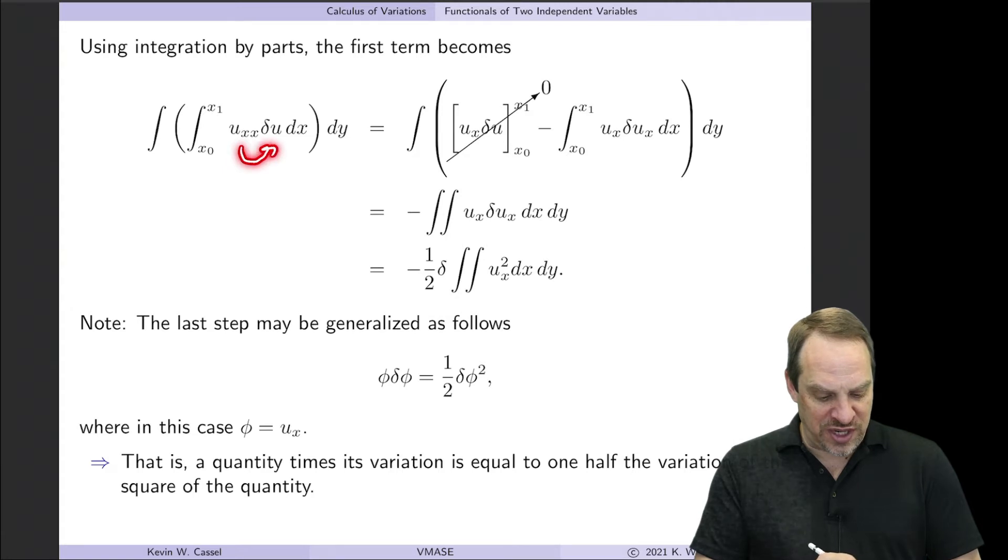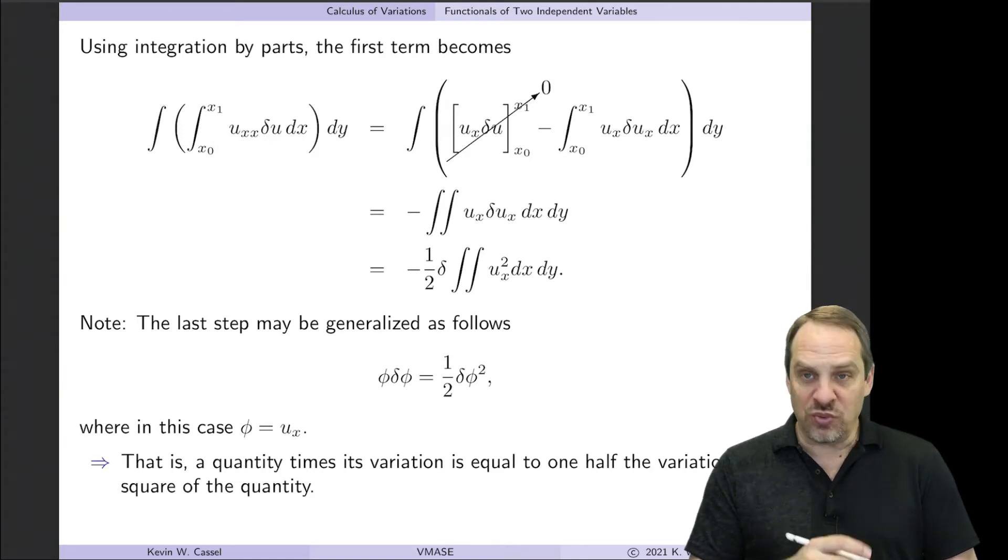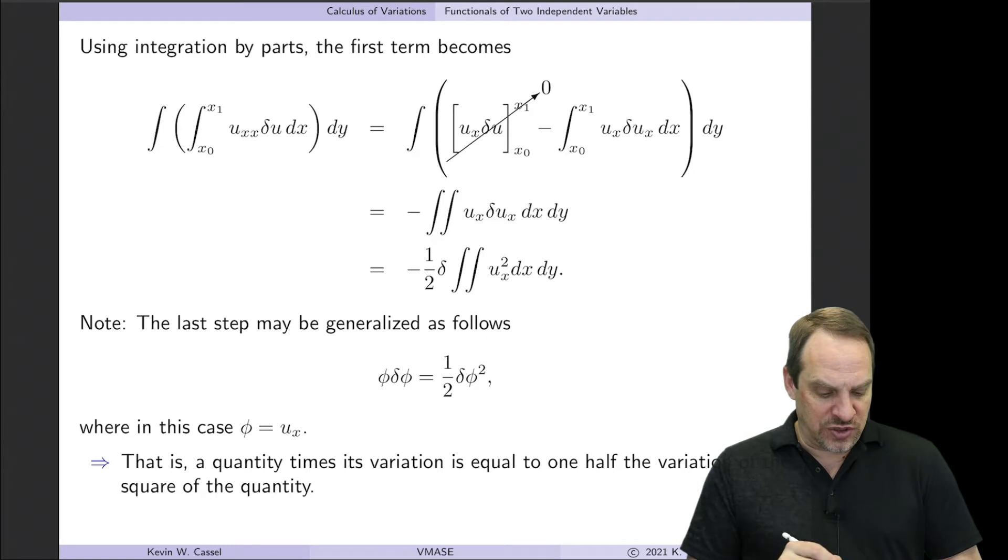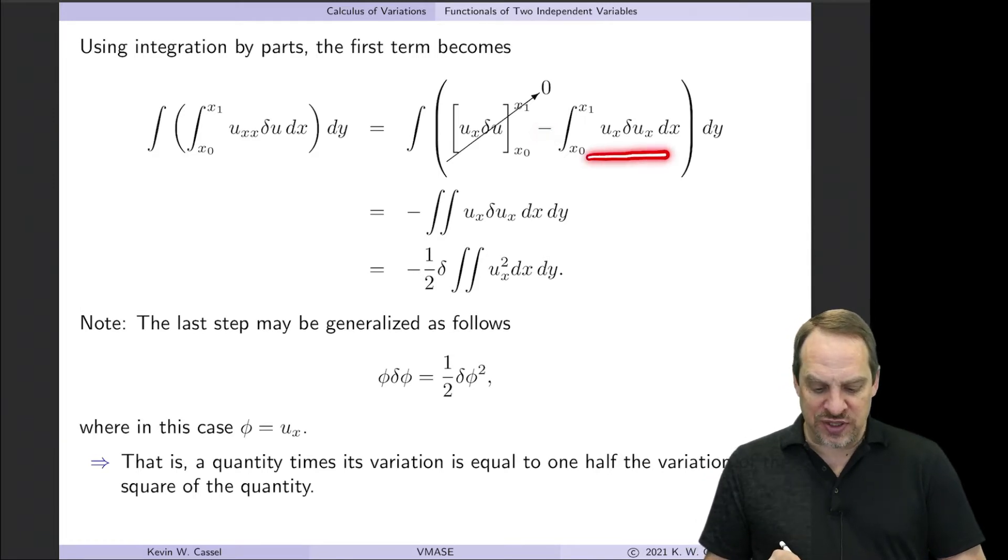So in a sense, I want to equilibrate the derivatives on the U and on the delta U. So to do that, we'll do integration by parts again, but now for the opposite reason. So I'll have my term evaluated at the endpoints. But because U is known and specified on the boundary, delta U is 0 and that term goes away.